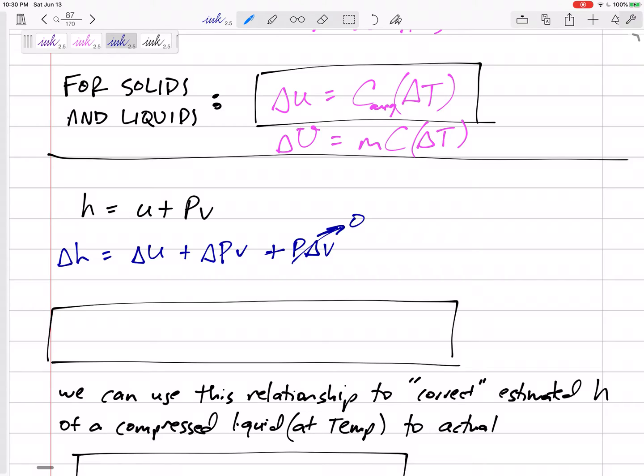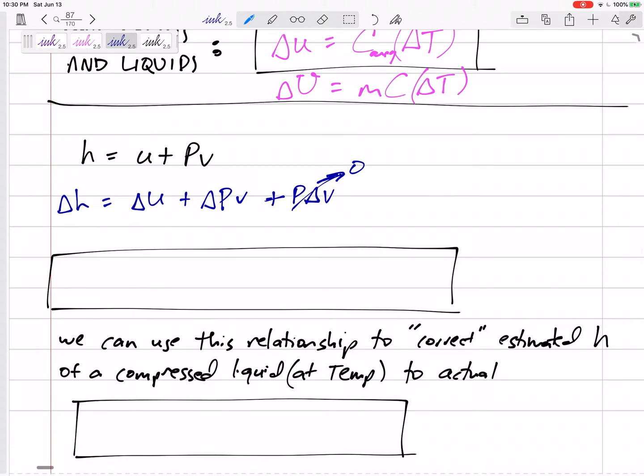And if this is negligible, we might still have the delta P times v. Many times this is very, very, very small, and if your delta P is not very large, then that term is small as well. So many times your delta h is equal to your delta u, and your delta u could be C delta T, C at the average temperature.